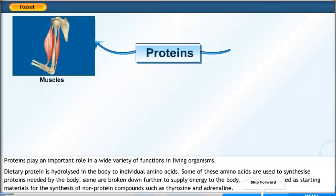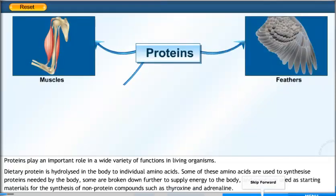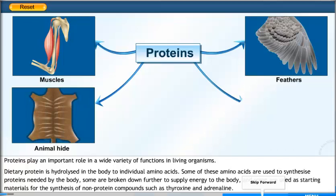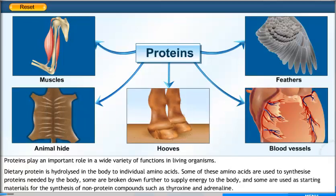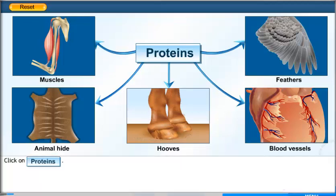Proteins play an important role in a wide variety of functions in living organisms. Dietary protein is hydrolyzed in the body to individual amino acids. Some of these amino acids are used to synthesize proteins needed by the body. Some are broken down further to supply energy to the body. And some are used as starting materials for the synthesis of non-protein compounds such as thyroxine and adrenalin.